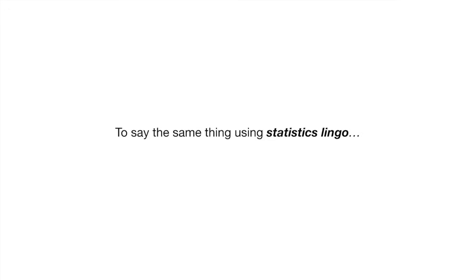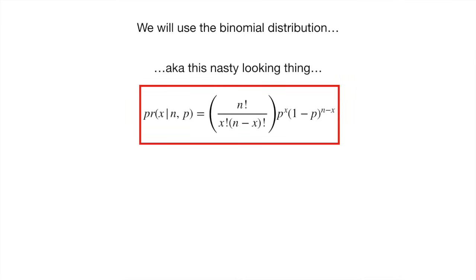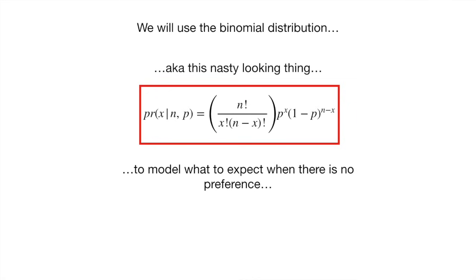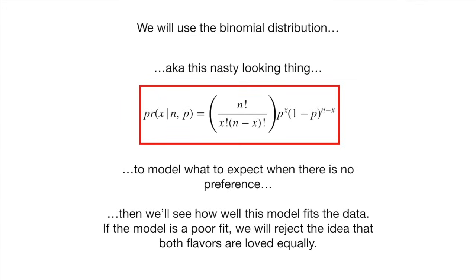To say the same thing using statistics lingo, we will use the binomial distribution — aka this nasty looking thing — to model what to expect when there is no preference. Then we'll see how well this model fits the data. If the model is a poor fit, we will reject the idea that both flavors are loved equally.